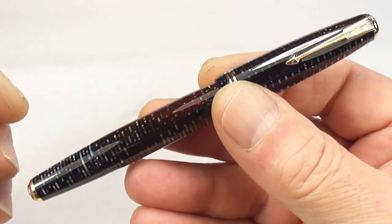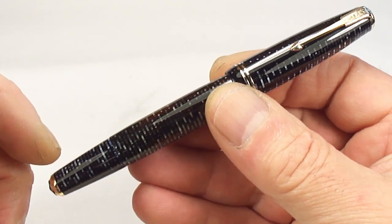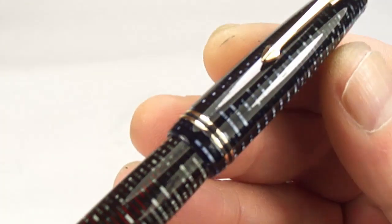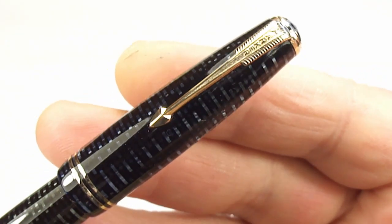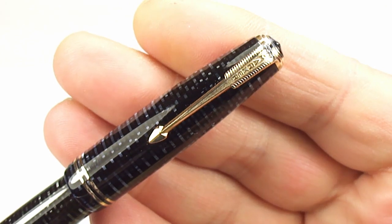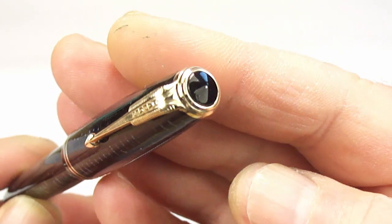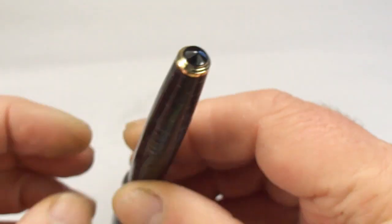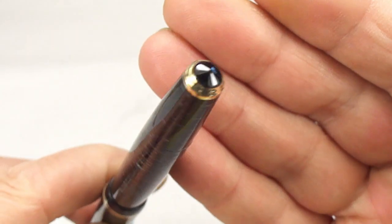This is the Parker Vacumatic Junior. The Junior, as you can see here, comes with two narrow cap bands at the bottom of the cap. It's got the very recognizable Parker clip with the split arrow design. To the very top, there's a black jewel, and if we twirl it around, you can see the blind cap also has this lovely jewel on the end.